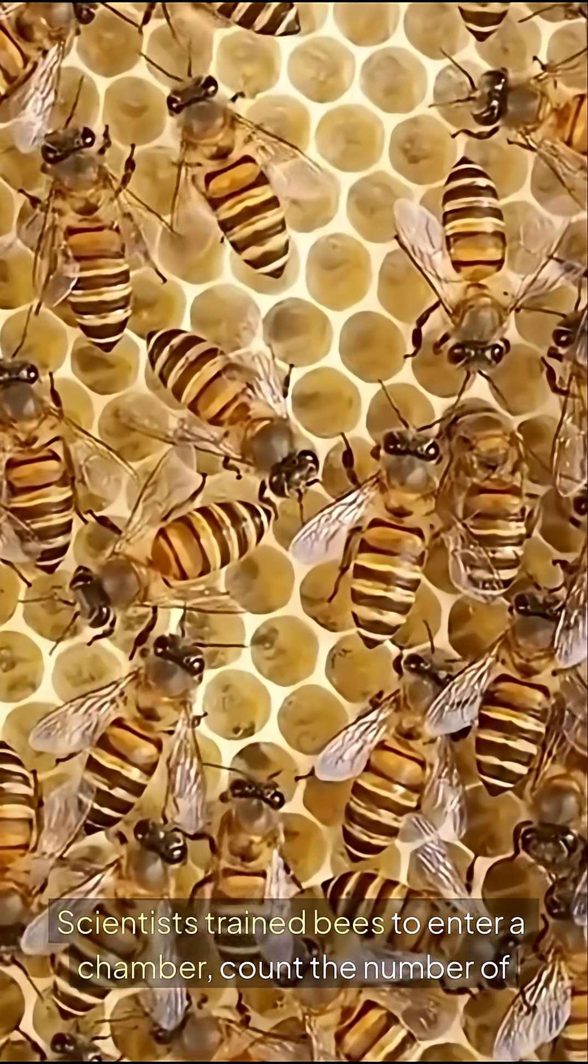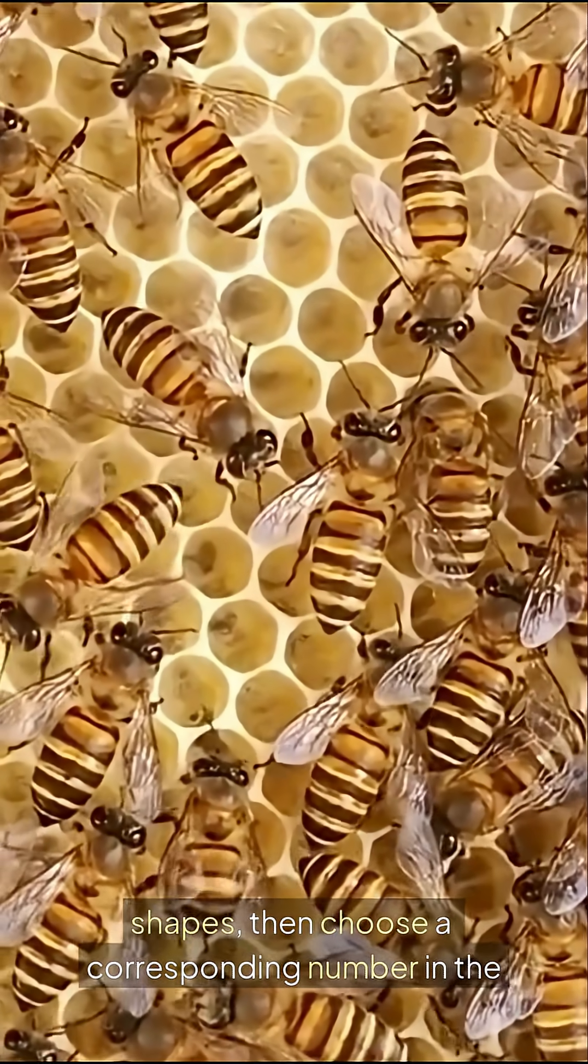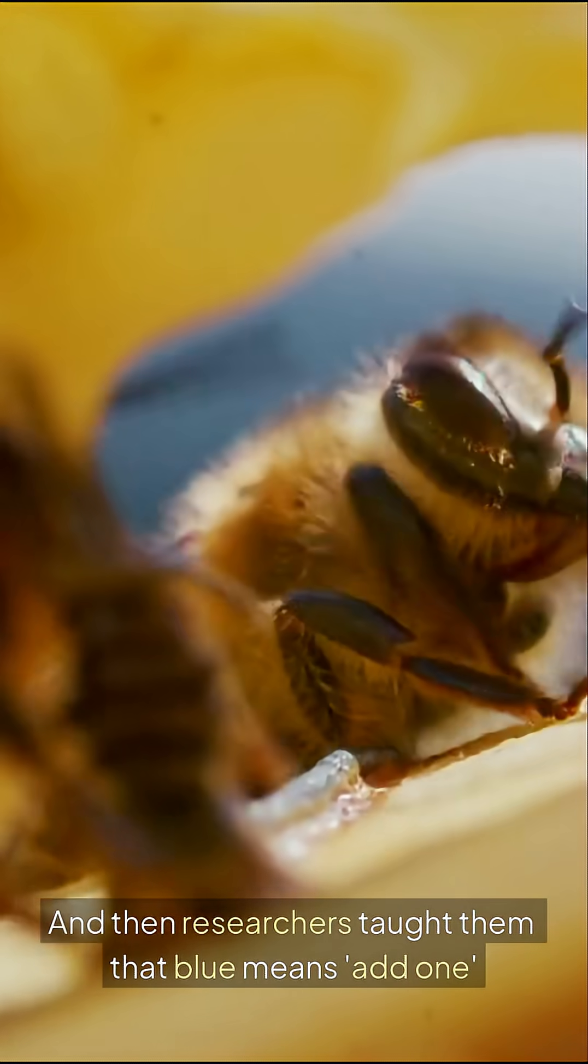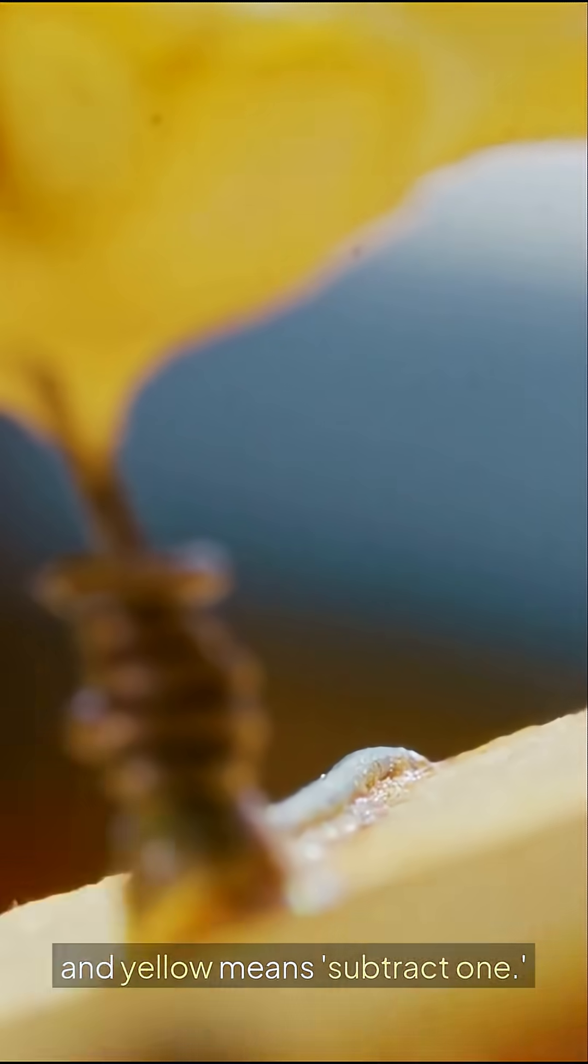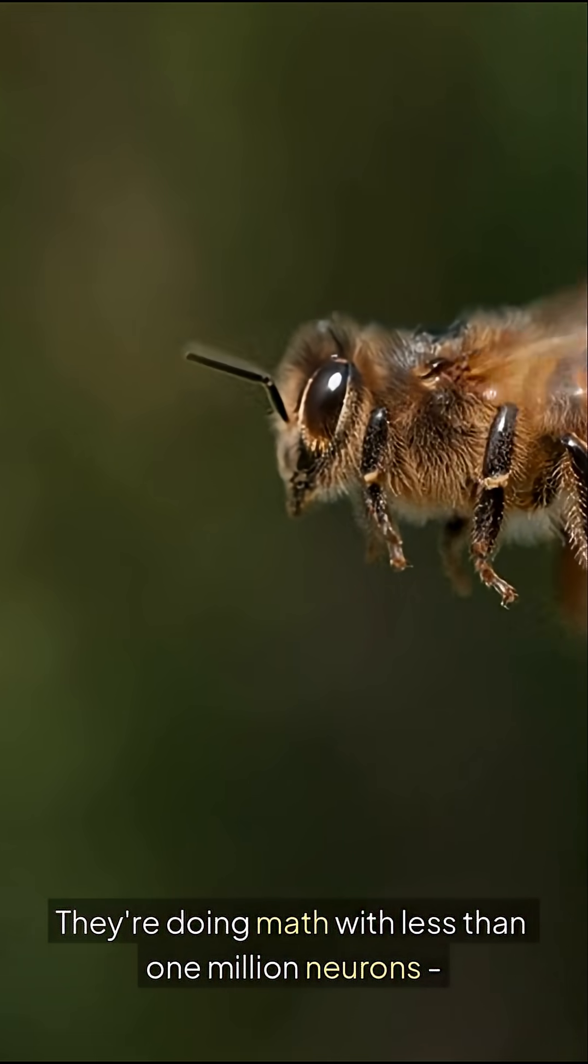Scientists trained bees to enter a chamber, count the number of shapes, then choose a corresponding number in the next chamber. And the bees learned it. Then researchers taught them that blue means add one and yellow means subtract one. And the bees learned arithmetic. They're doing math with less than one million neurons.